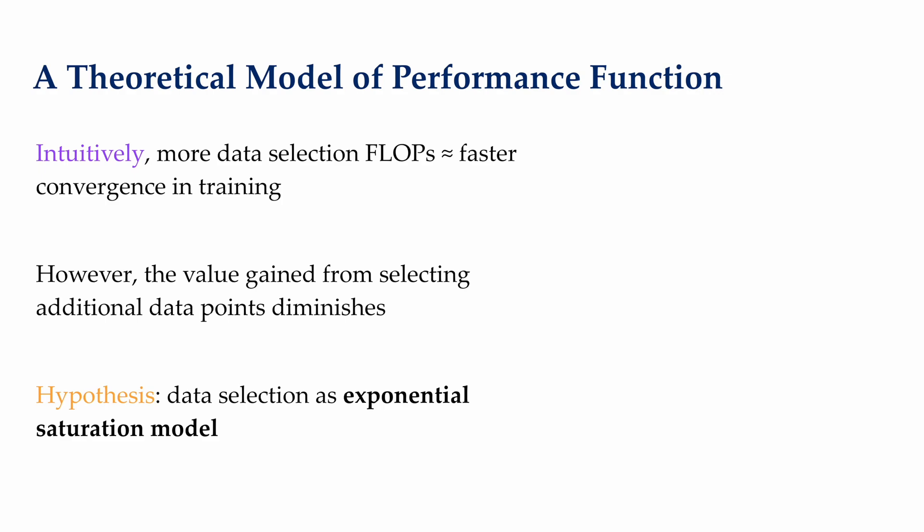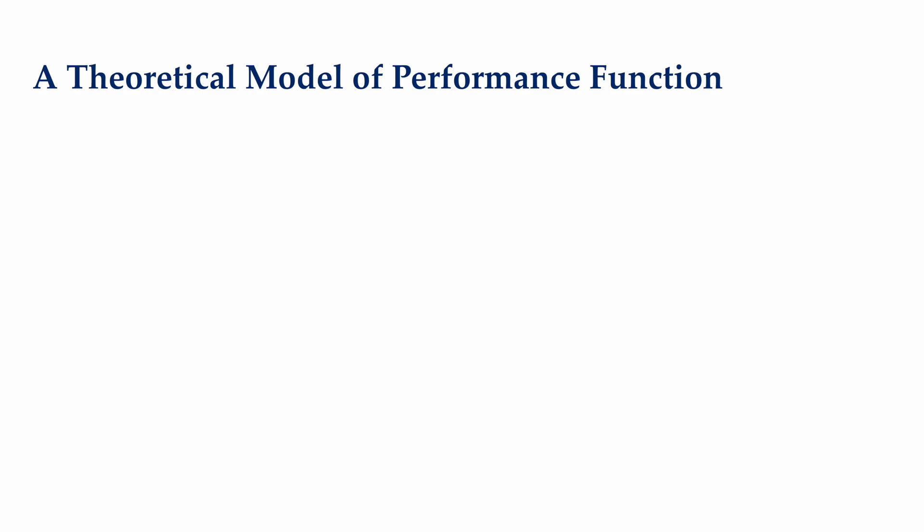To analytically analyze the trade-off between the compute of data selection method and the expected gain in model performance, we will need to model this relationship mathematically. Intuitively, we know that the more compute-intensive data selection methods are able to achieve higher performance with less data samples. However, the value of information gained from selecting additional data points quickly diminishes as more points are being explored. Therefore, we hypothesize that data selection could be modeled with some kind of exponential saturation function, where the initial selected data input produces most of the value to the system, and each time a new data is added, it contains or has smaller utility than the previous data.